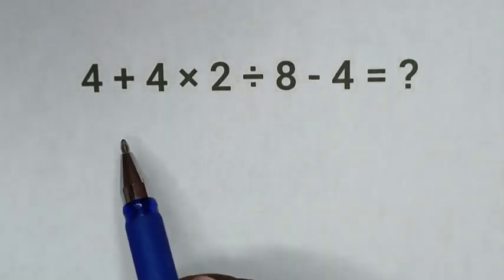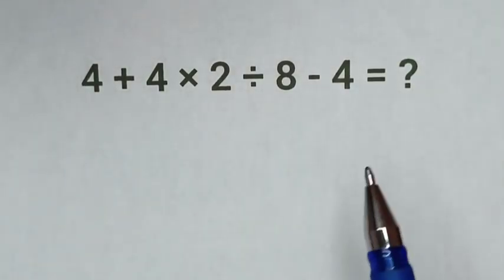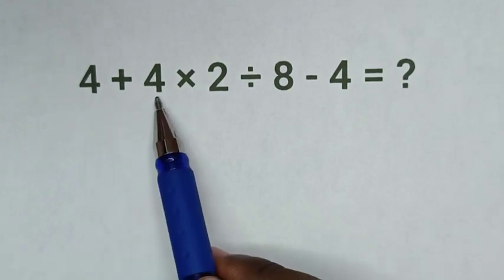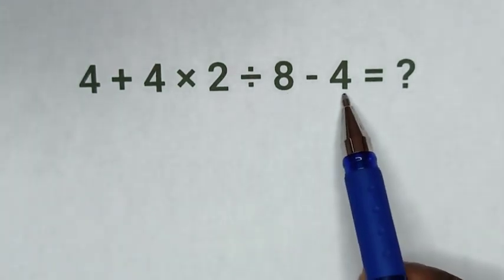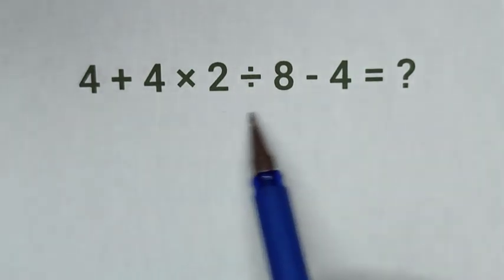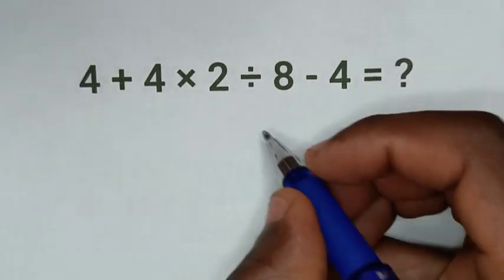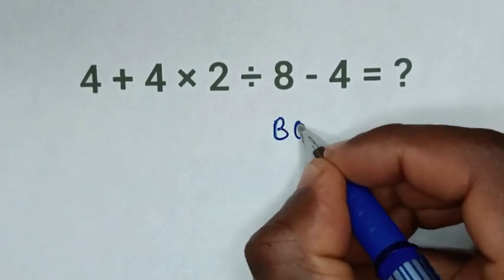Hello, you are welcome. On how to solve this math problem which is 4 + 4 × 2 ÷ 8 - 4. From this math problem, we solve it by using BODMAS rule.